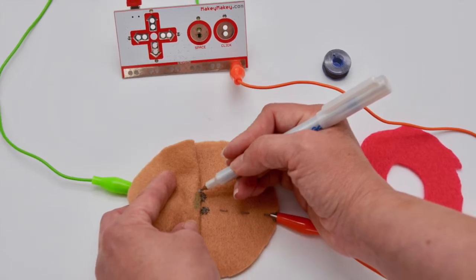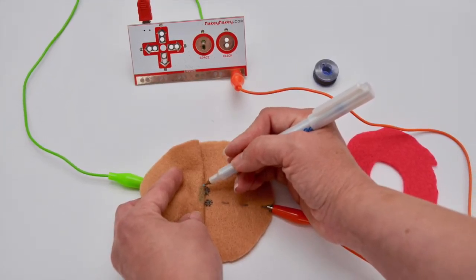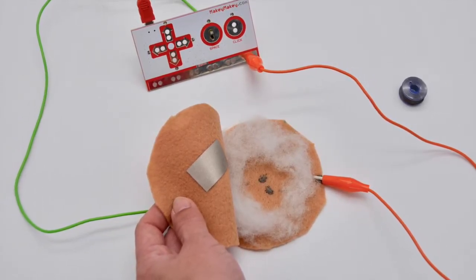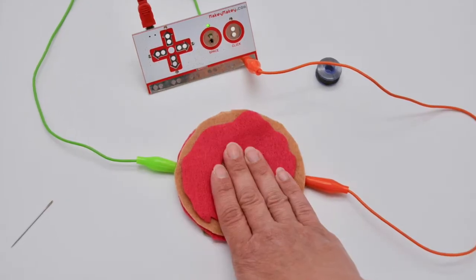Mark on the top layer of felt the area that will connect the two conductive traces. Cut a small piece of conductive fabric tape for the top of your doughnut and use stuffing as your cushion for your doughnut.